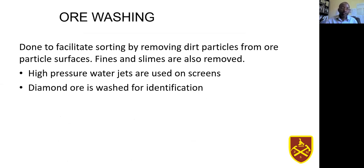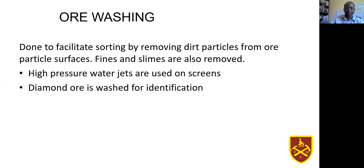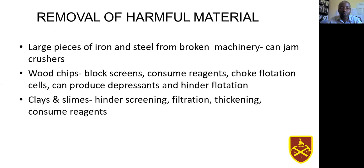In ore handling, you might also need to do what is called ore washing in order to remove unwanted fine particles that can interfere with your ore sorting or concentration. For example, in the diamond industry you might need to identify diamonds using their fluorescence, but if the diamonds are coated with fine particles, you won't be able to clearly identify them. So you need to do what is called ore washing.